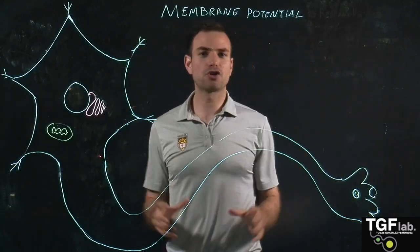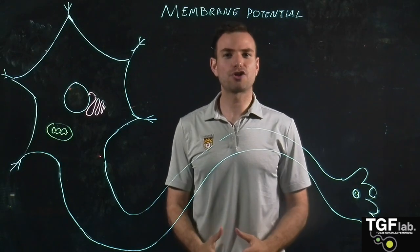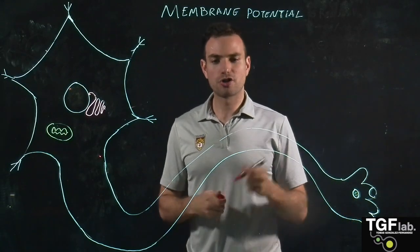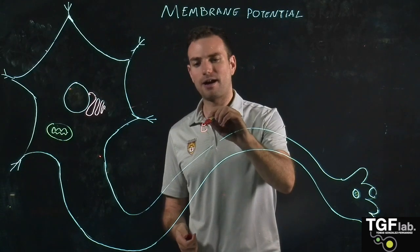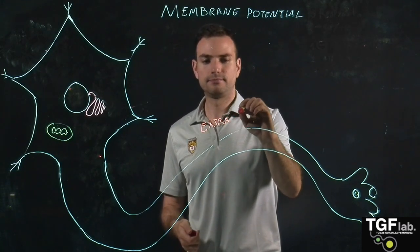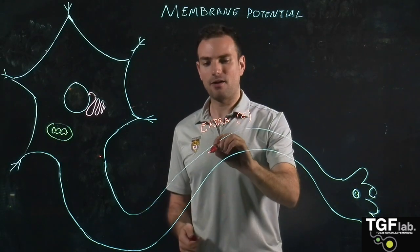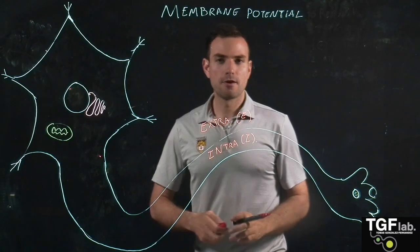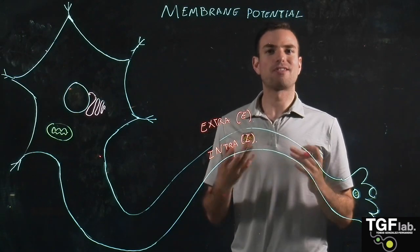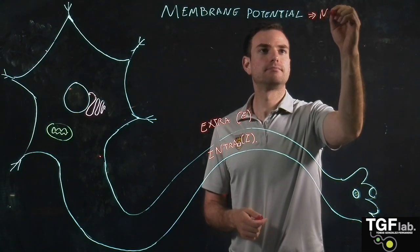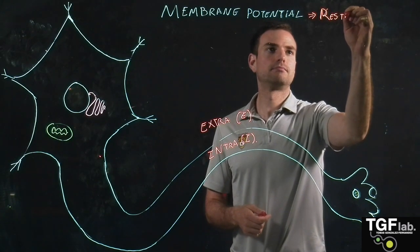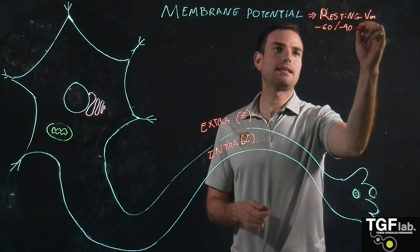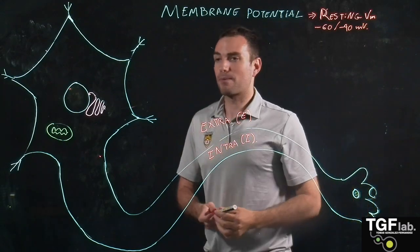In order to understand the membrane potential, let's first define it. The membrane potential is the voltage difference across the cell membrane — the difference of electric charge between the outside of the cell, or extracellular space (E), and the inside of the cell, or intracellular space (I). This membrane potential is around minus 60 to minus 90 millivolts; therefore the membrane potential is negative.